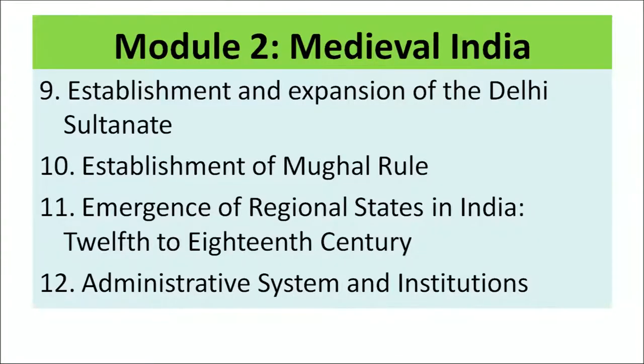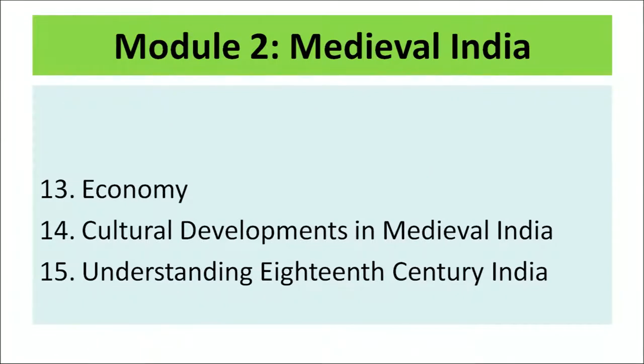Now let us understand Module 2, that is Medieval India. This module is designed to highlight the factors and forces responsible for the advent of the Turkish and Mughal in India. You will find 7 lessons in continuation with the previous lessons: Lesson 9 – Establishment and Expansion of Delhi Sultanate, Lesson 10 – Establishment of Mughal Rule, Lesson 11 – Emergence of Regional State in India, Lesson 12 – Administrative System and Institution, Lesson 13 – Economy, Lesson 14 – Cultural Development in Medieval India, and Lesson 15 – Understanding of 18th Century India.